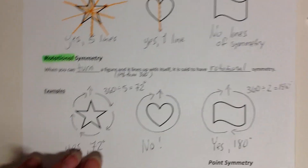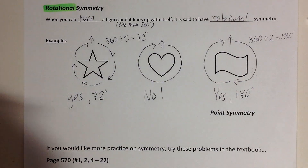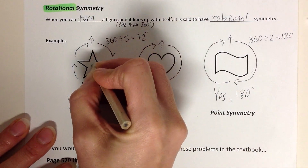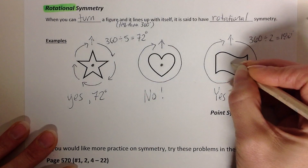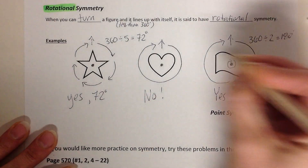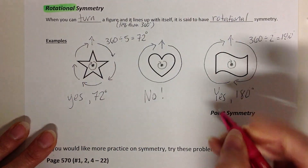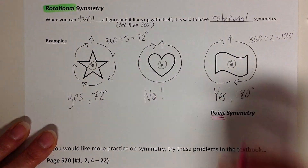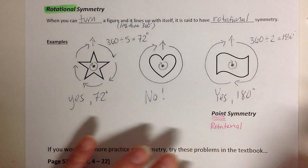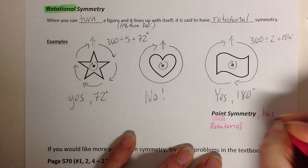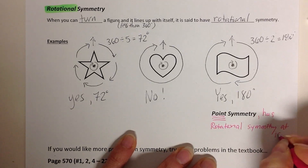Now there's one more special kind. Point symmetry — how do you get a point? A point is when you were turning it. In this one, you held on to the middle of the star. In this one, you held on to the middle of the heart, the middle of the flag, and you were turning around that point. So when I hear 'point,' I immediately should be thinking this is some kind of rotational symmetry — and it's a special kind. Point symmetry is when a figure has rotational symmetry at 180 degrees.